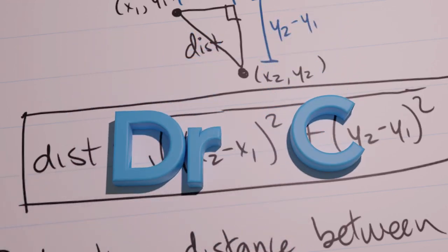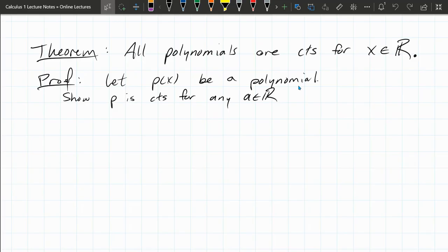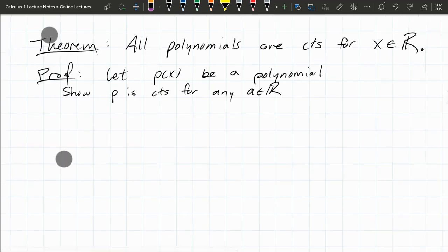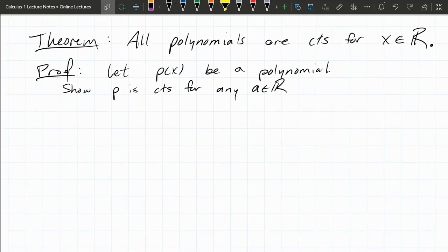We have a theorem here that all polynomials are continuous, and the x values they're continuous on is all the real numbers. Remember, polynomials are defined—their domain is all real numbers. So why would all polynomials be continuous? We're going to show that if p(x) is a polynomial, we're going to show that p is continuous for any x value in the real numbers.